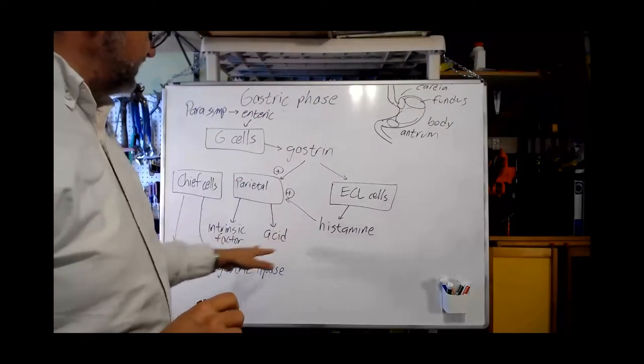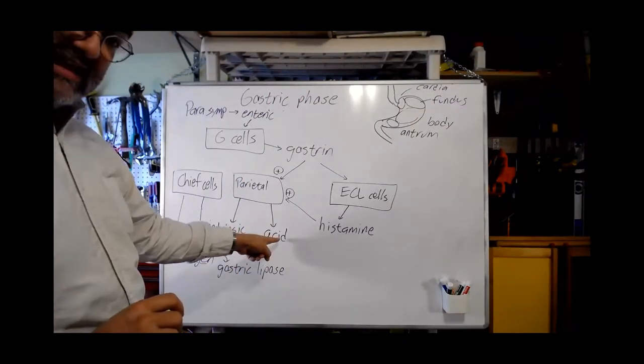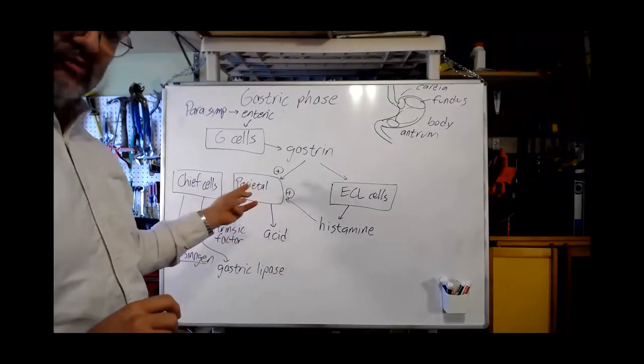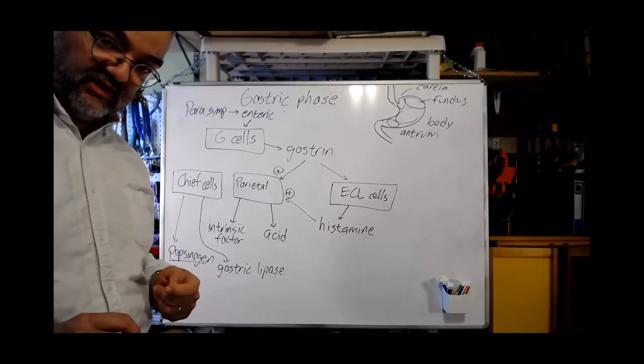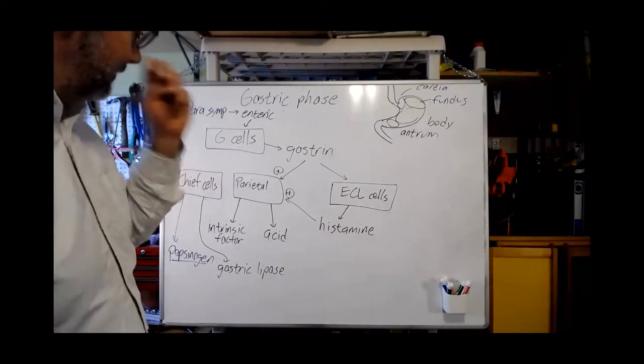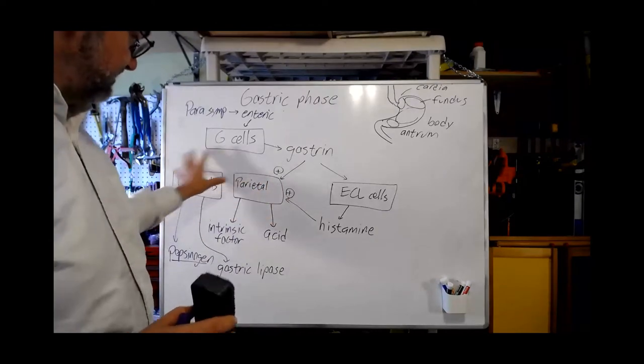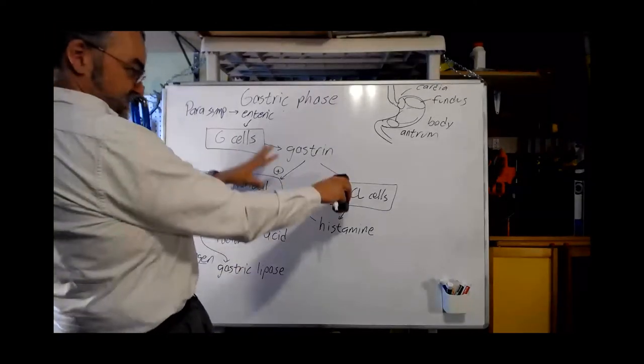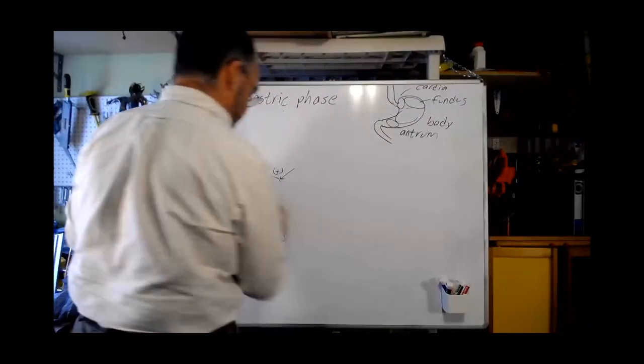So what all of this has led to is the production of these things: hydrochloric acid and intrinsic factor from the parietal cells, pepsinogen and gastric lipase from the chief cells, through the actions of the G cells and the ECL cells. Let's take this away and focus in on the parietal and chief cells.